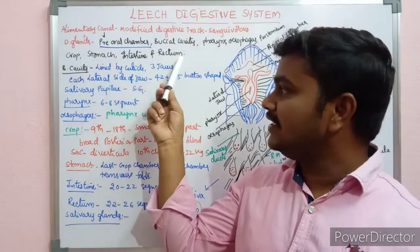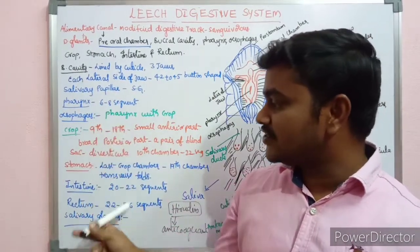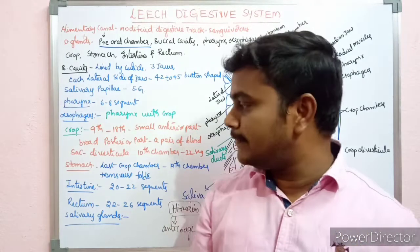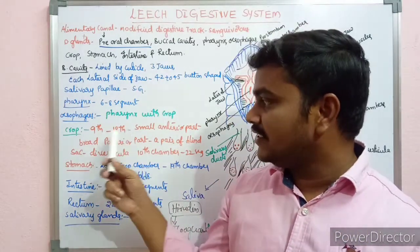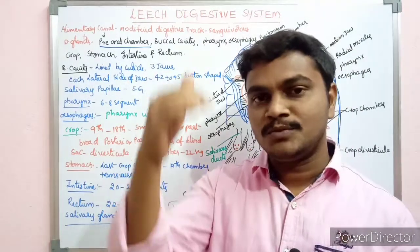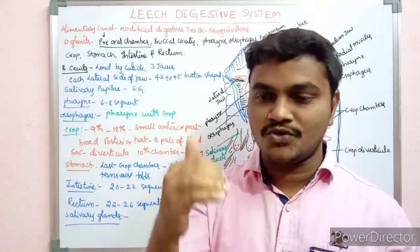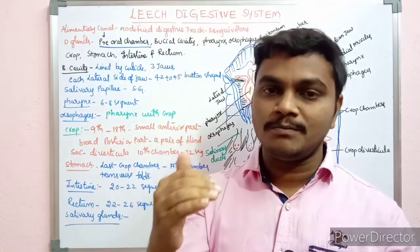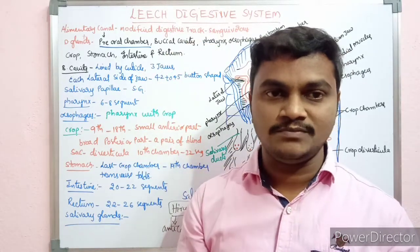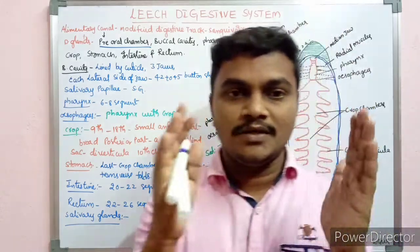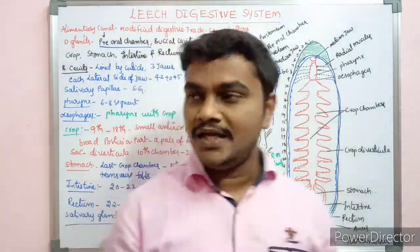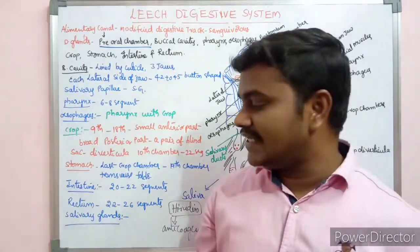From the pre-oral chamber to the rectum, every chamber is arranged in segments. The specific distinct segments include the main crop in the 9th to 18th segments, and the crop chambers are arranged in those segments for storage. This is a diagrammatic presentation along with the alimentary canal and digestive glands.